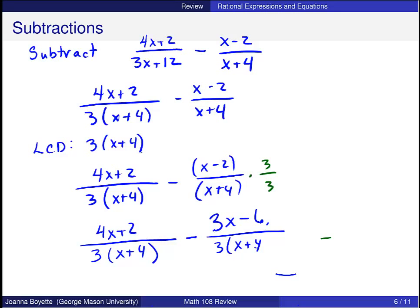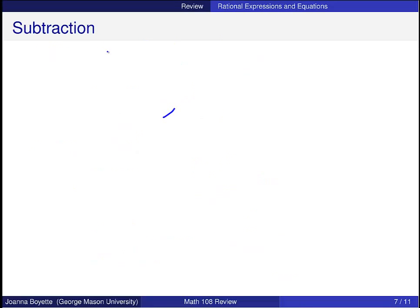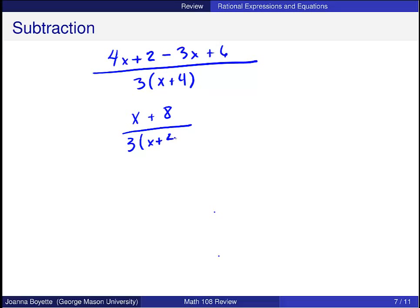I'm going to combine those into one fraction: 4x plus 2 minus 3x plus 6. Be sure to change those signs. Over 3 times x plus 4. Combine like terms in the numerator, and I get x plus 8 over 3 times x plus 4. And again, check to see if you can simplify. This should be the final answer.